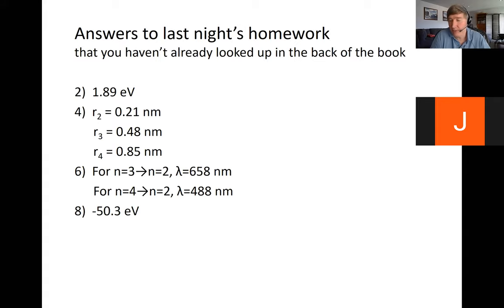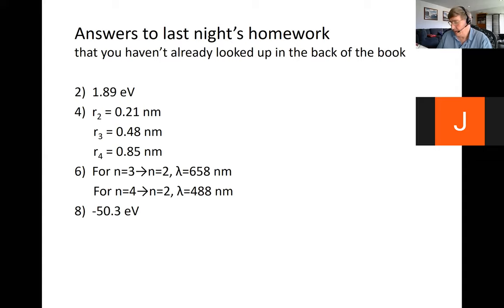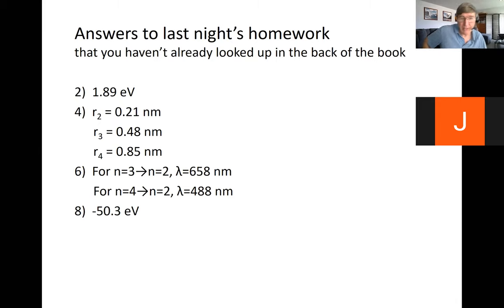Let's definitely do number eight. So it says the ground state of a helium ion is negative 54.4 electron volts. Somehow an electron has gotten kicked up to a higher level, then it drops back down to the ground state. They're saying the emitted photon has a wavelength of 304 nanometers. Let's do that one.